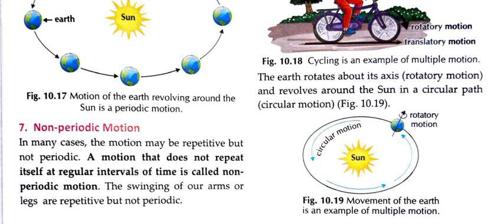Non-periodic motion — yaani ki yahan par kya hota hai ki motion repeat hota hai, baar baar hota hai, lekin non-periodic yaani iska time fix nahi hota hai. In many cases, the motion may be repetitive but not periodic. A motion that does not repeat itself at a regular interval of time is called non-periodic motion. Baar baar haath ya pair hamare hilte hain, lekin unke hilne ka time fix nahi hota hai.